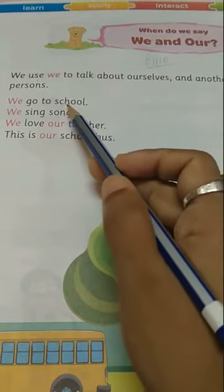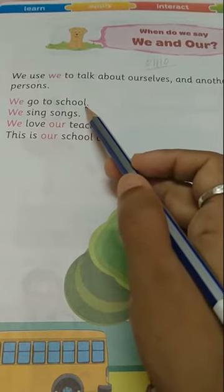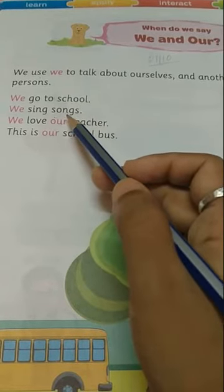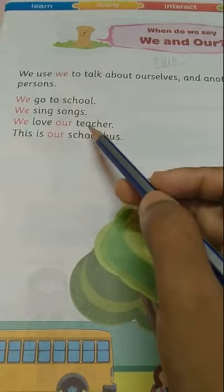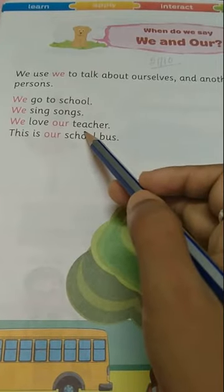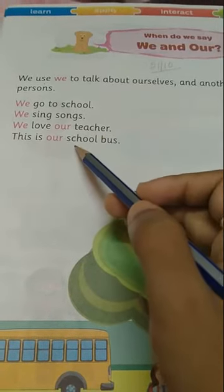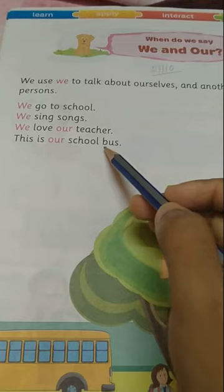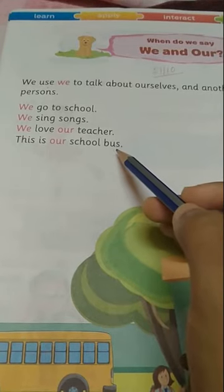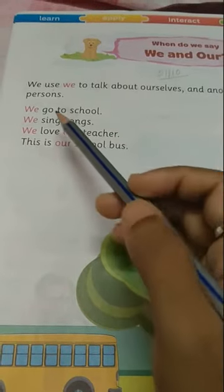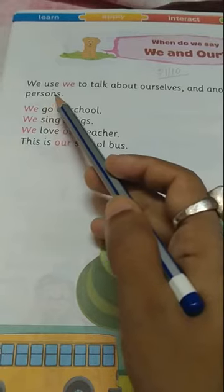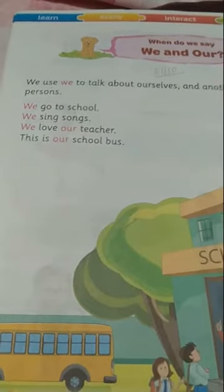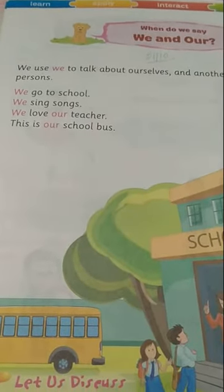The spellings are: school — S-C-H-O-O-L. Songs — S-O-N-G-S. Teacher — T-E-A-C-H-E-R. Bus — B-U-S. And persons — P-E-R-S-O-N-S. These are the spellings for today's class.